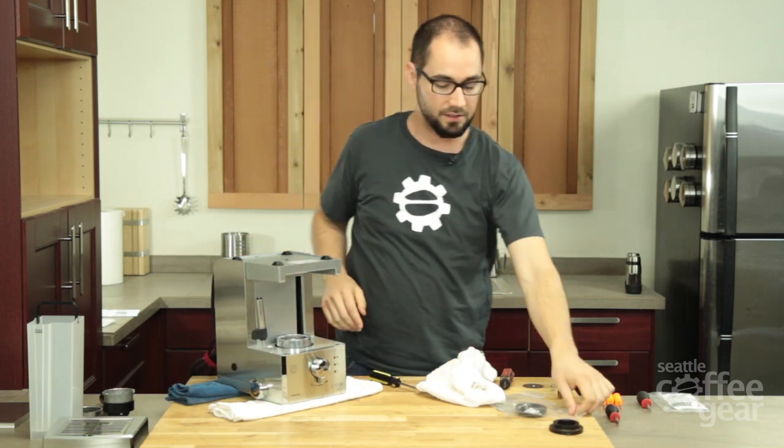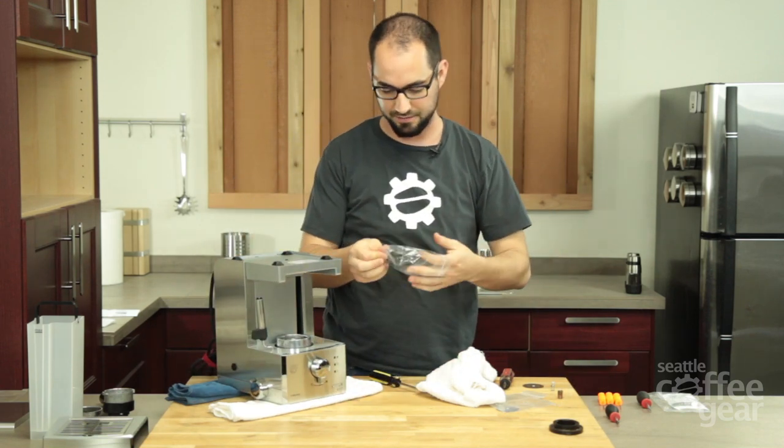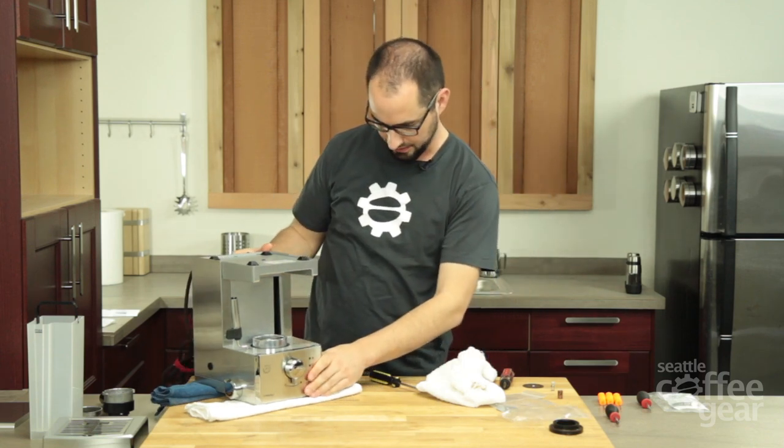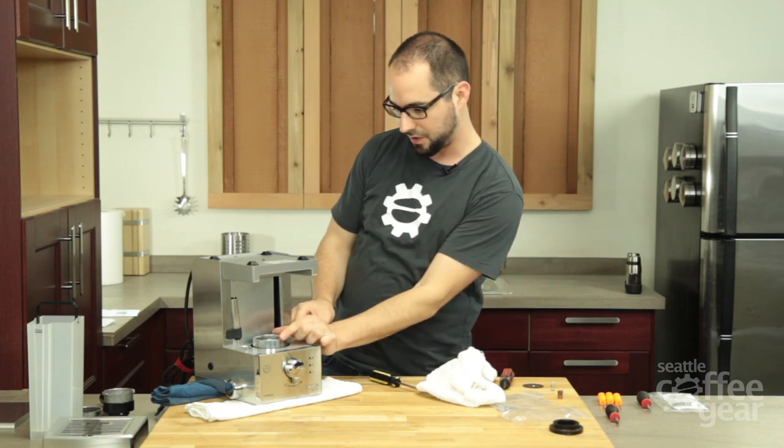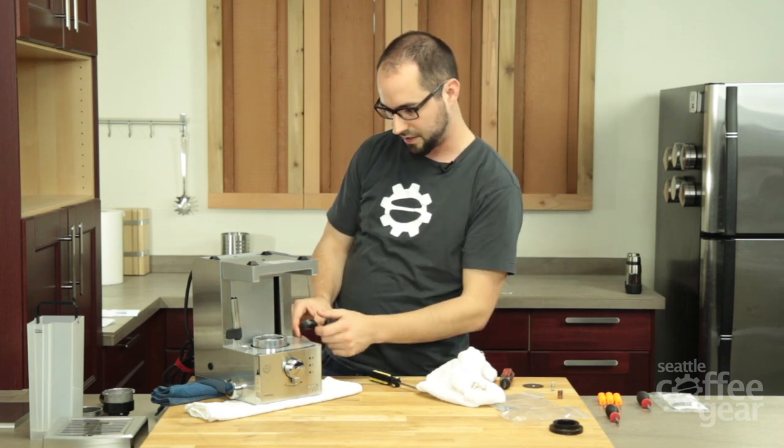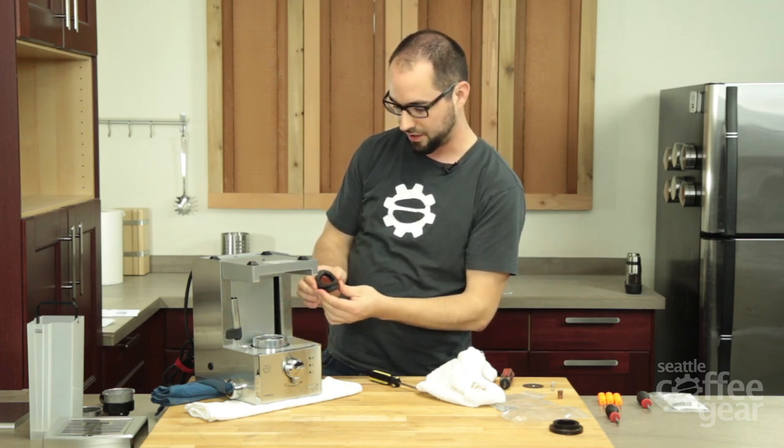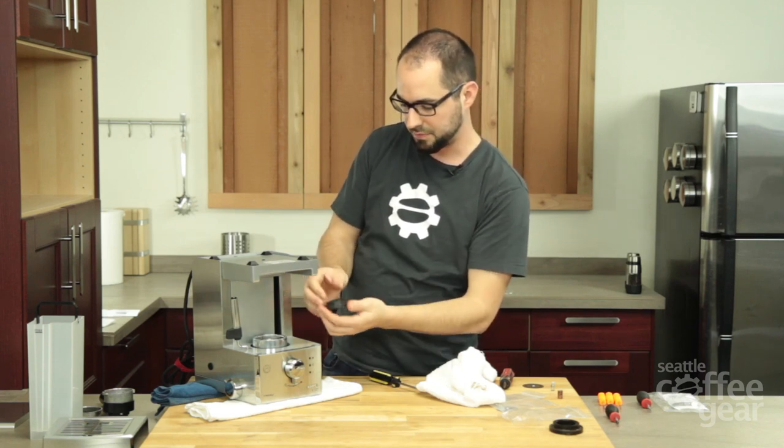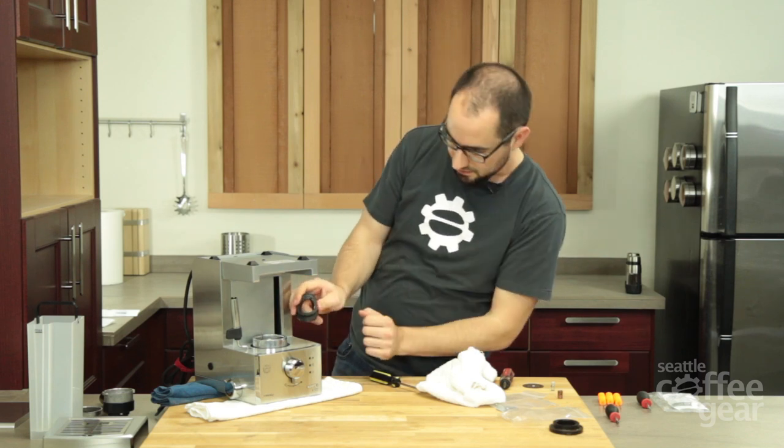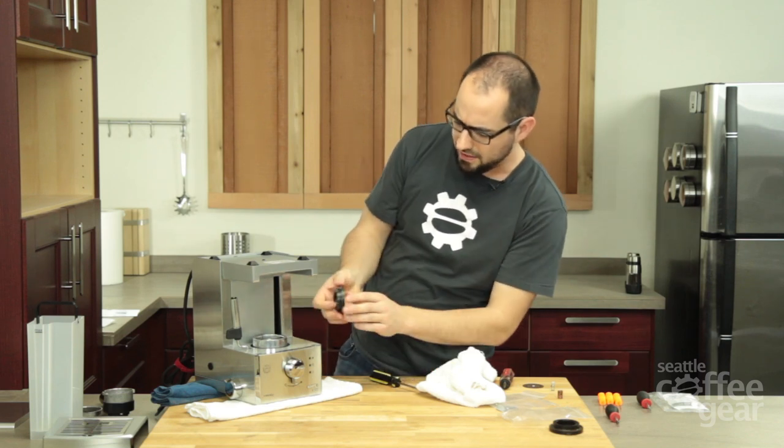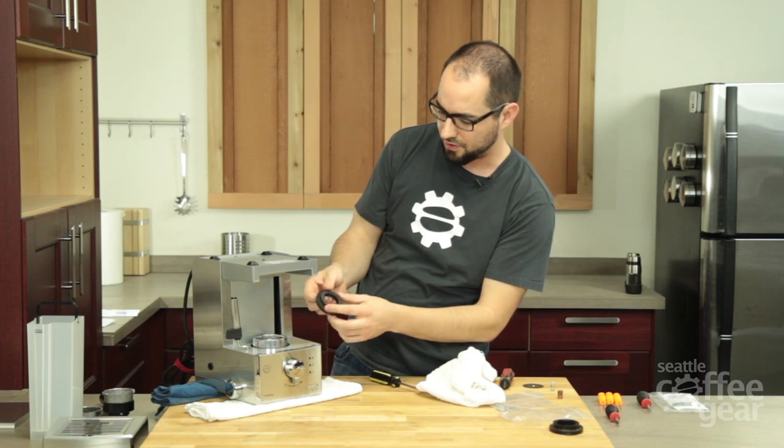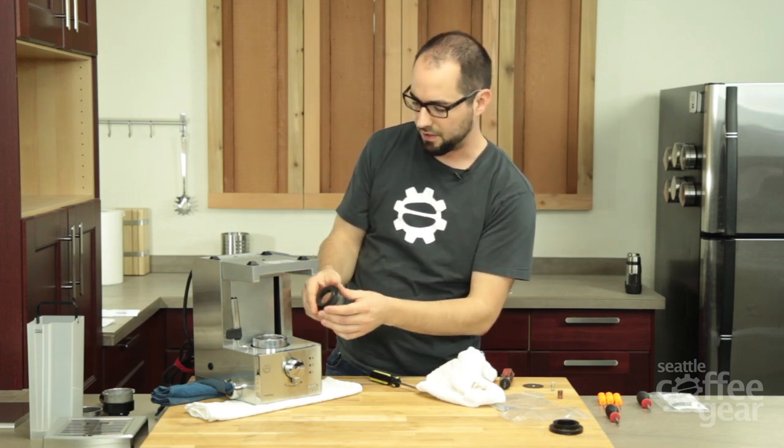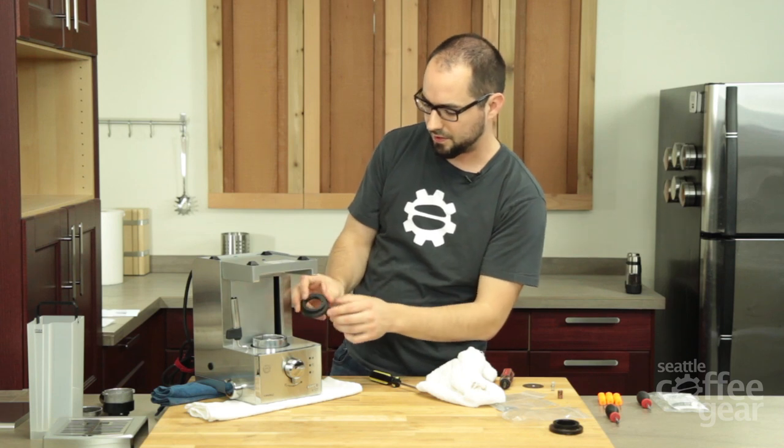So now we're ready for our new brew head gasket. And just like when we removed it, we used these portafilter channels to our advantage. We're going to do the same thing here. I always find that kind of folding it like this and kind of going in, it works. It's very easy. Saeco's brew head gasket for this machine, it's also the same one for the Aroma and Via Venezia. It's very specific. You don't see brew head gaskets like this very often.